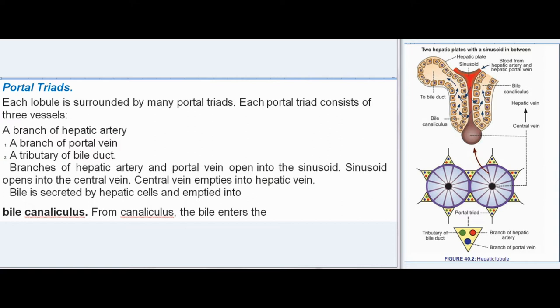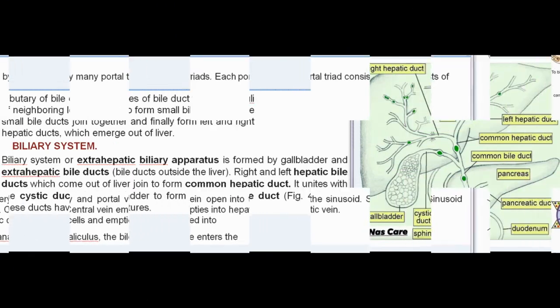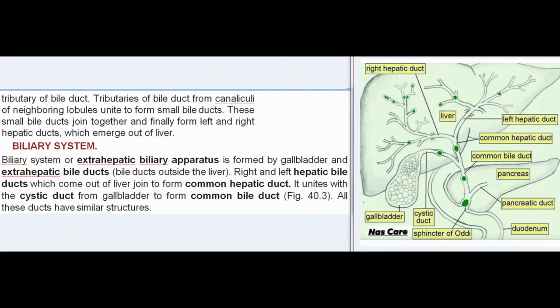Branches of the hepatic artery and portal vein open into the sinusoid. The sinusoid opens into the central vein, which empties into the hepatic vein. Bile is secreted by hepatic cells and emptied into the bile canaliculus. From the canaliculus, bile enters the tributary of the bile duct. Tributaries unite to form small bile ducts, which join to form left and right hepatic ducts that emerge out of the liver.